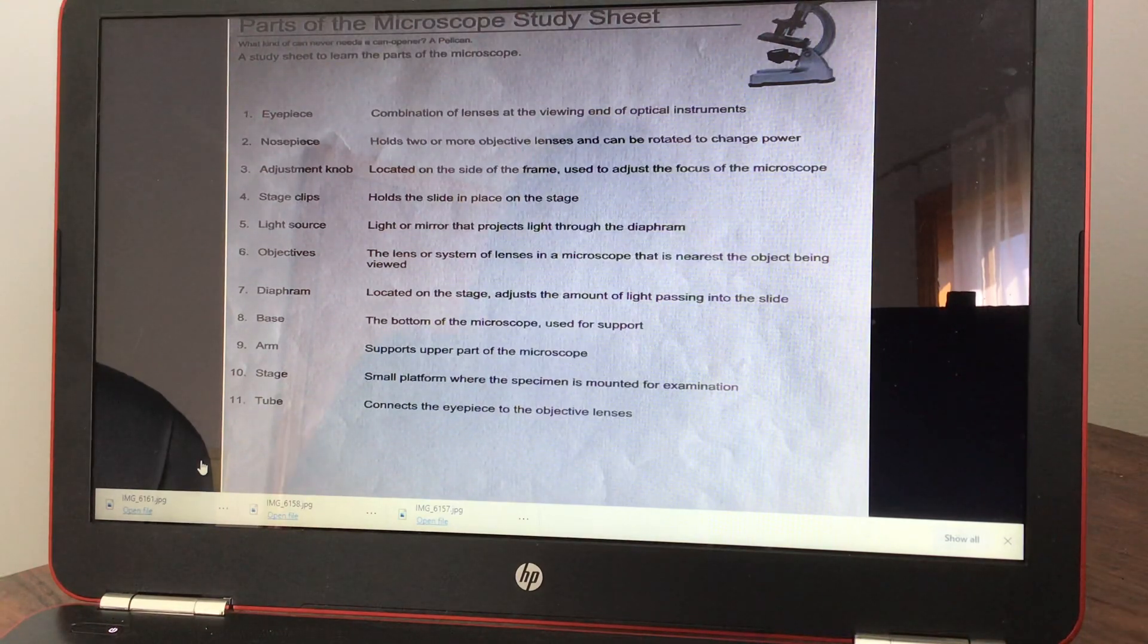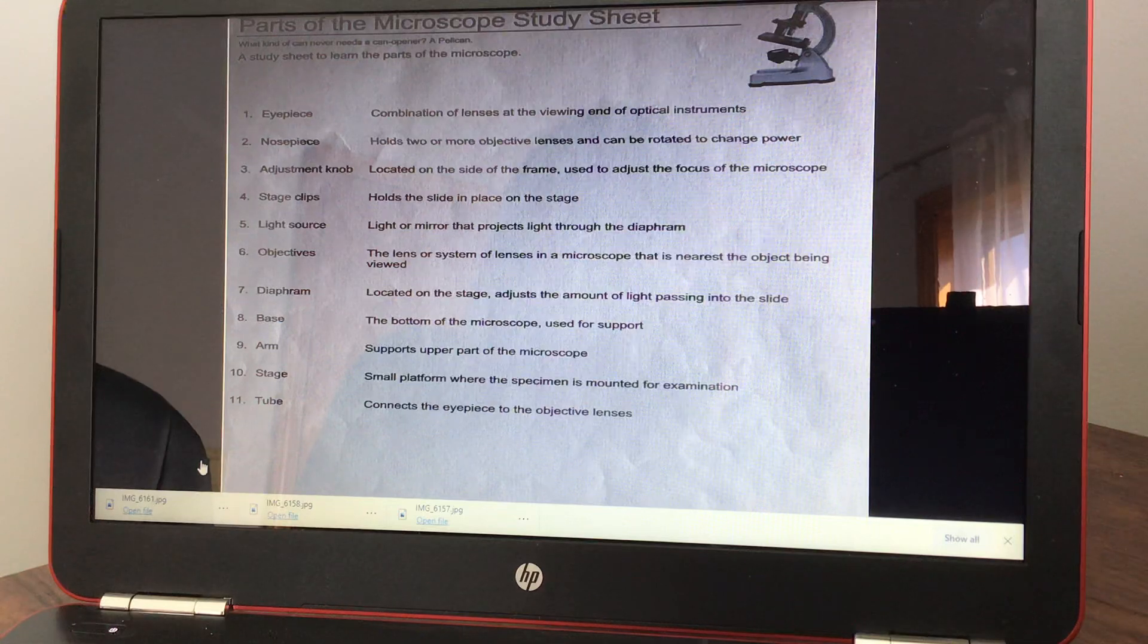Number three, adjustment knob: located on the side of the frame, used to adjust the focus of the microscope. Number four is stage clips, and it holds the slide in place on the stage. Number five, light source: the light or mirror that projects light through the diaphragm.